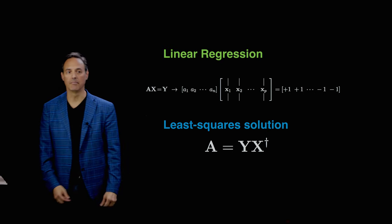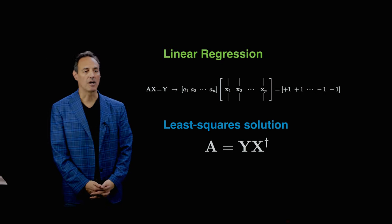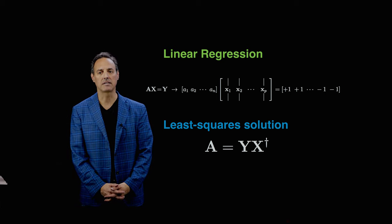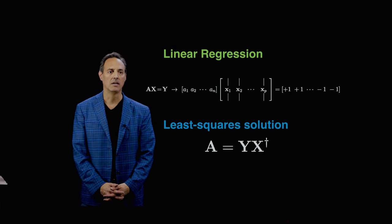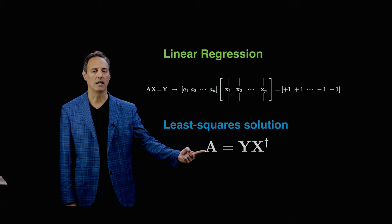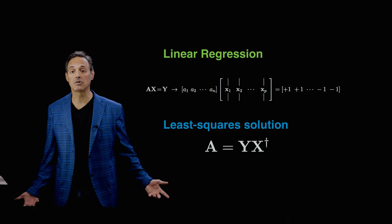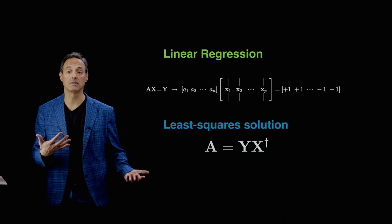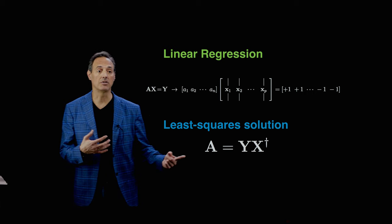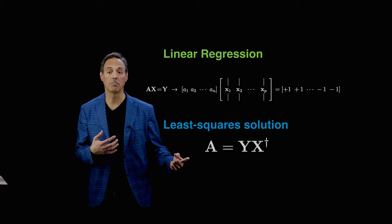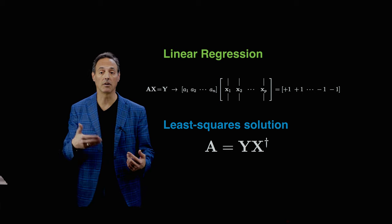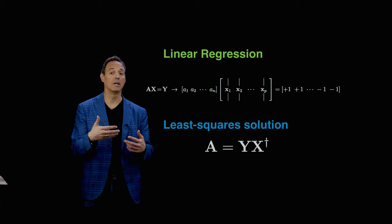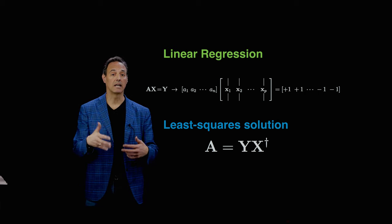There's one solution — just take the pseudo-inverse on the right-hand side. XX pseudo-inverse is the identity, so Y times X pseudo-inverse gives me a solution for A. This is the least-squares solution. But there are other ways to solve this — we could impose L1 penalization or other regularization on AX equals B, and you'll find very different solutions in that case.